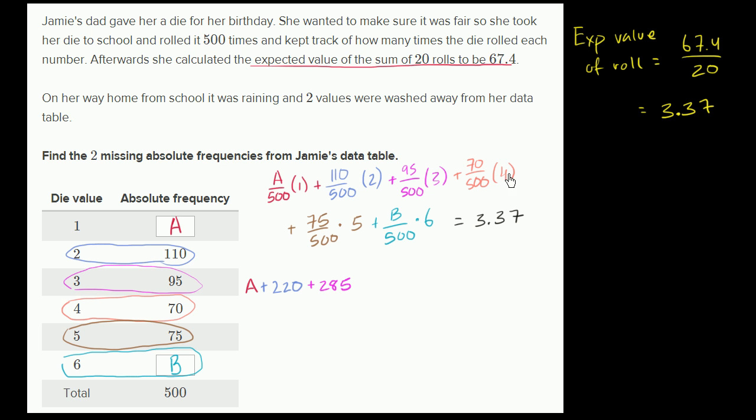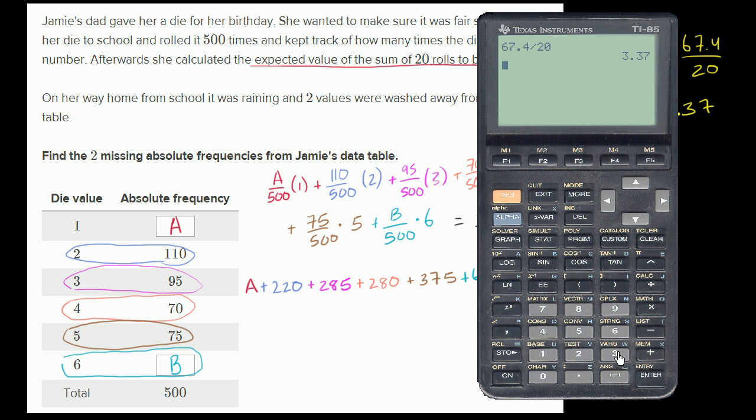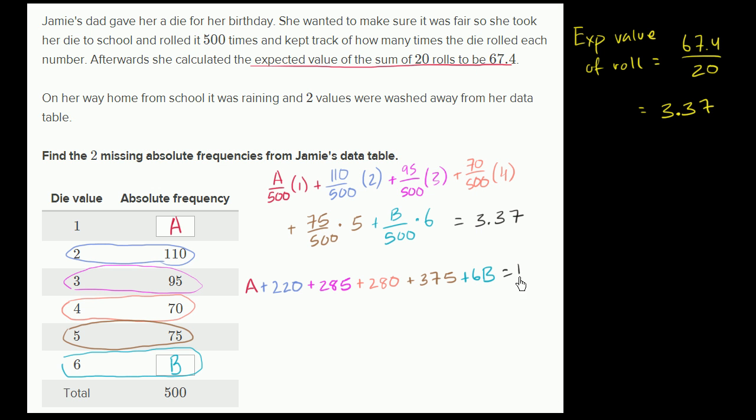And then 70 times four is 280, plus 280, 75 times five is going to be 350 plus 25, 375, so plus 375, plus 6B, plus 6B, plus 6B is going to be equal to, is going to be equal to this times 500, and that is going to be equal to 3.37 times 500, is equal to 1685. 1685.